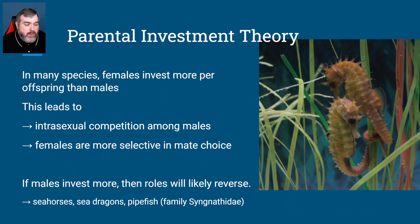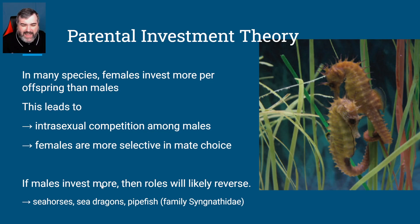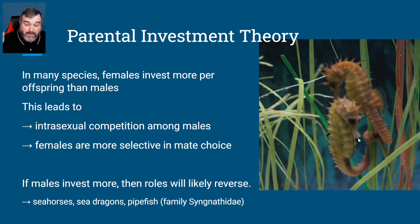In lots of species, females invest more time per offspring, so intrasexual competition is usually more common among males, and females have to be more selective. But if the males invest more, the roles reverse. We see this in the family Syngnathidae — seahorses, sea dragons, pipefish, and possibly stickleback fish. In seahorses, the male is actually the one that carries the babies. The female lays her eggs into his pouch, and he carries the offspring until they are born.